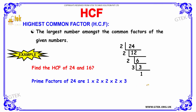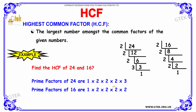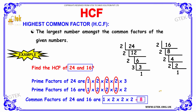Similarly, for 16, we construct the prime factorization. The prime factors of 16 are 2 into 2 into 2 into 2. Among these factors, we find the factors common to both lists. The common factors are 1, 2, 2, and 2. Multiplying the common factors gives the Highest Common Factor — the HCF of 24 and 16.